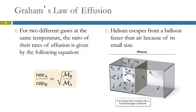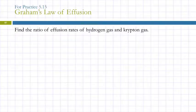Find the ratio of effusion rates of hydrogen gas and krypton gas. This makes people crazy because there's no numbers - what do we do when there's no numbers?